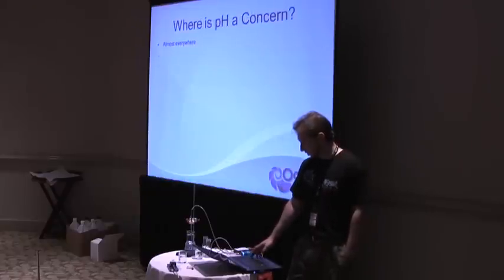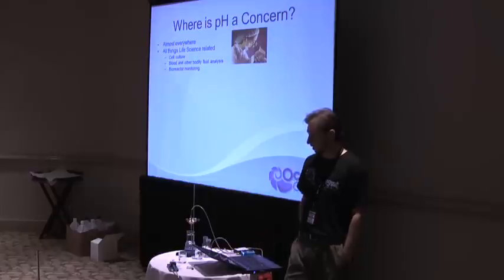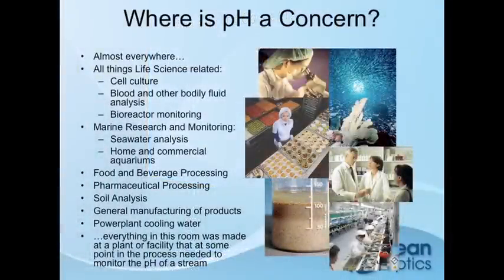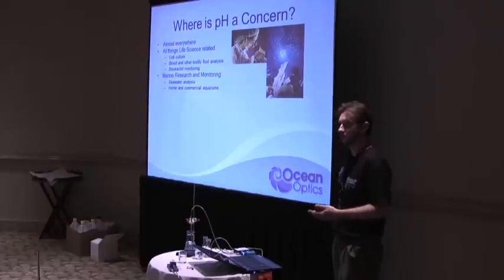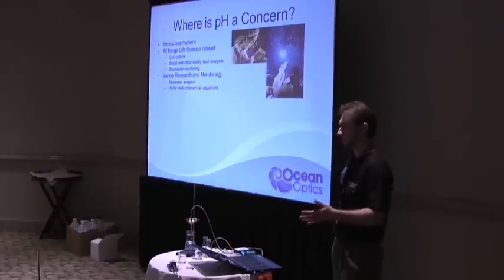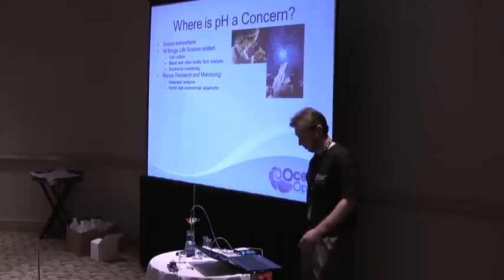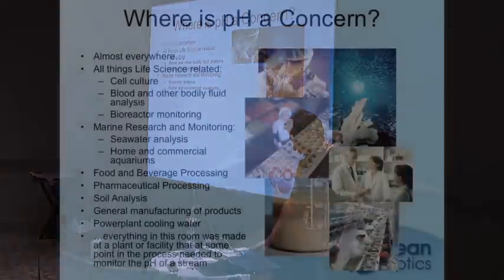So where is pH a concern? Really almost everywhere. Life sciences — things like cell culture, blood, bioreactor monitoring. Marine research monitoring — the downtown St. Petersburg Pier Aquarium just bought a pH system last summer to monitor their seawater for all their aquariums. Not just home aquariums, but big ones like Monterey Bay. You could definitely use this for home and commercial use.